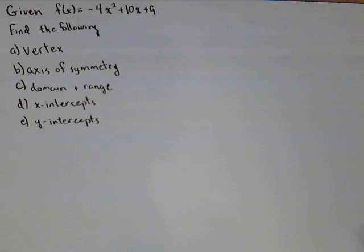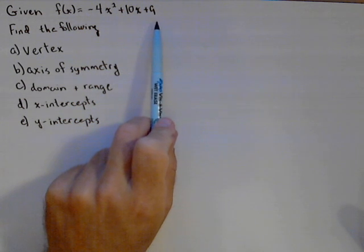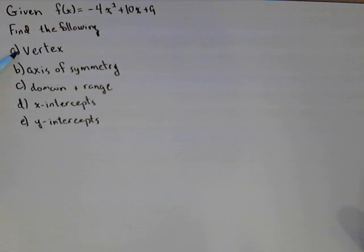In this video, we're going to take a quadratic and find its characteristics algebraically. So here's our quadratic, minus 4x squared plus 10x plus 9, and we're going to find the following.